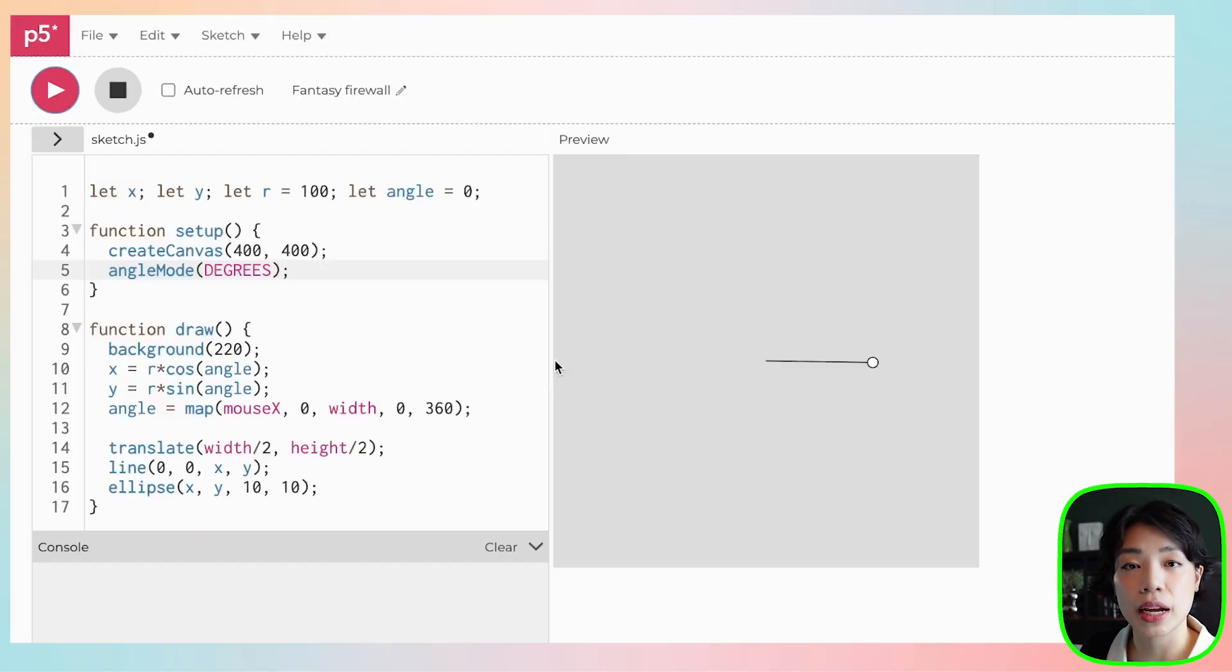Two things that I want you to notice with what I just showed you. One is that the range of x and y goes between negative radius to positive radius, which right now it's at 100. So it went between negative 100 to positive 100.